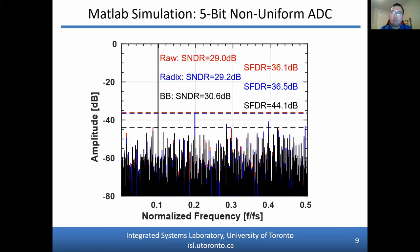Looking at the performance of the calibration techniques on this 5-bit ADC MATLAB model, raw data with no calibration is shown in red. Radix calibration, shown in blue, shows minimal improvement in SNDR and SFDR. Bit-by-bit calibration, shown in black, has a bit more improvement in SNDR while providing a significant improvement in SFDR.